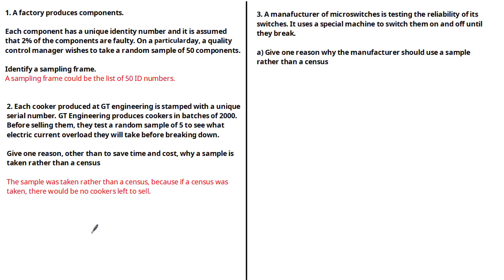Let's have a look at the last question. A manufacturer of micro switches is testing the reliability of its switches. It uses a special machine to switch them on and off until they break. Give one reason why the manufacturer should use a sample rather than a census. Similar to the previous example, the process of testing involves switching the micro switches on and off until they break. Therefore, the testing process for a census would destroy the switches, meaning that there would be no switches left to sell, and this is why using a sample would be more appropriate for the manufacturer.